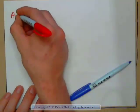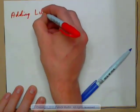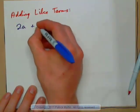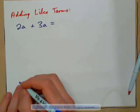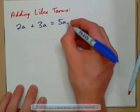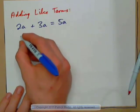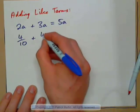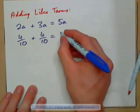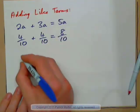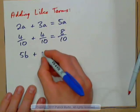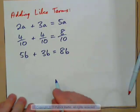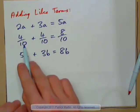Here's how adding like terms works. If you have 2 apples and you add 3 apples, how many apples is that? 5 apples — just like the dimes. 4 dimes plus 4 dimes would be 8 dimes — like terms. Or, 5b plus 3b would be 8b — 8 bananas. So that's how we add and subtract fractions when the denominators are the same.